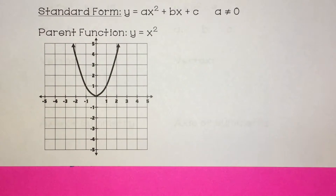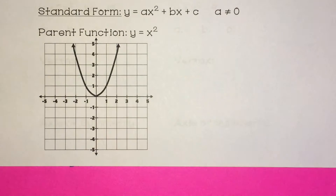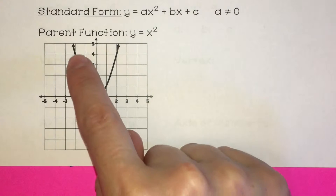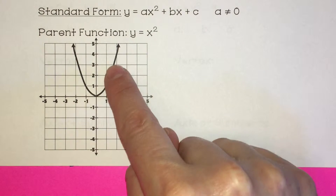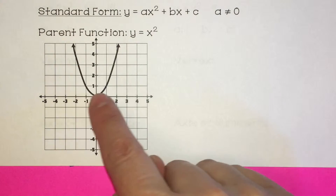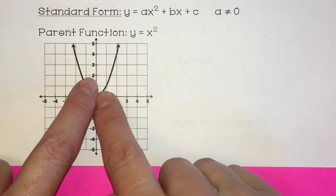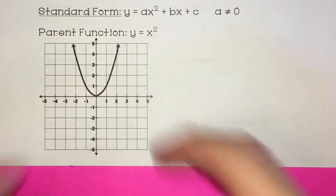The shape is called a parabola. Anytime you graph a quadratic function, you're going to graph it as a parabola. You're going to make sure it's kind of U-shaped at the bottom, not a perfect V — that's a different type of function.